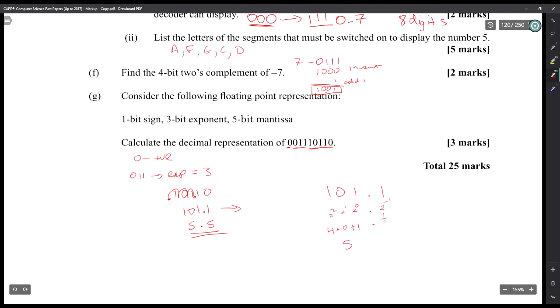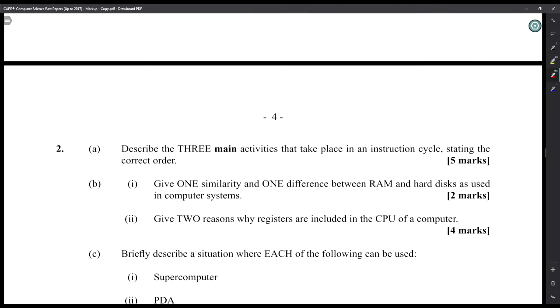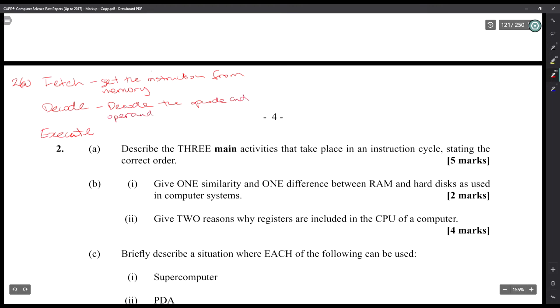Number two: describe the three main activities that take place in an instruction cycle, stating the correct order. The three main activities are fetch, decode, execute. Sometimes this has four main activities: fetch, decode, execute, and store, but that's okay.